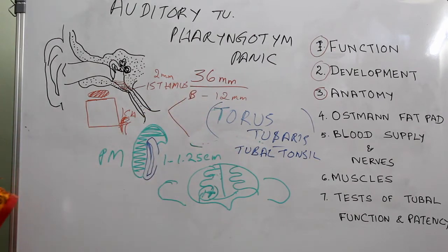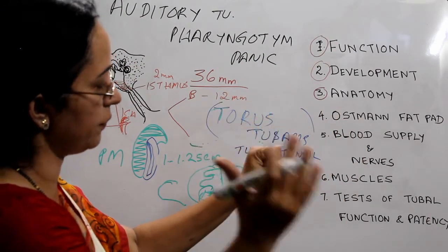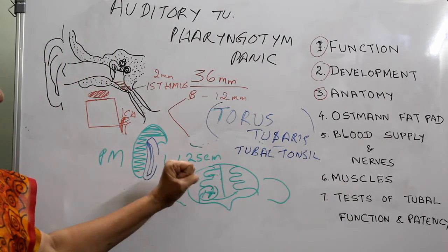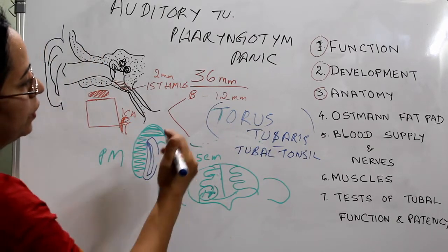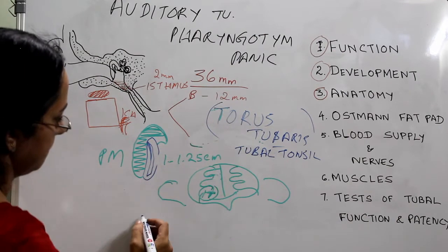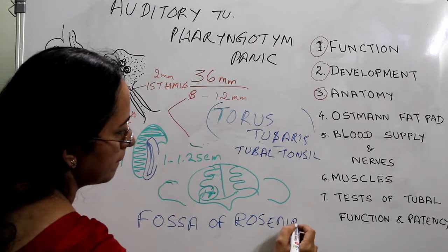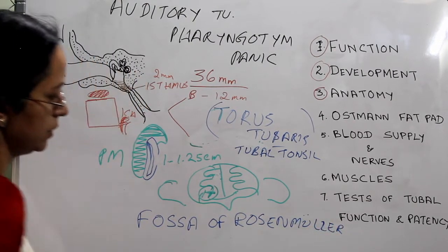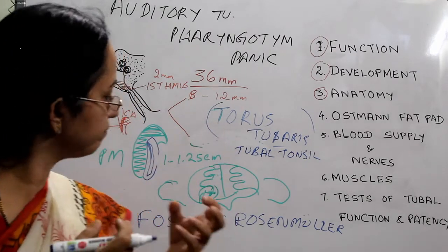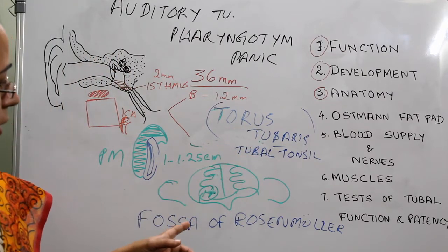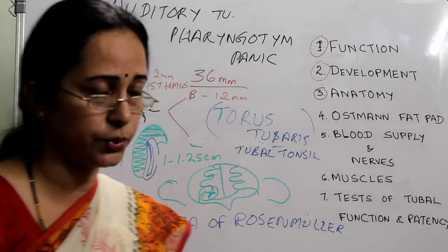Behind the torus tubaris, behind the tubal elevation, there is a depression or pouch called the Fossa of Rosenmuller. This fossa is seen as a depression or invagination behind the torus tubaris. The Fossa of Rosenmuller is important because it is a common site of origin of nasopharyngeal malignancy as well as primary occult tumors.